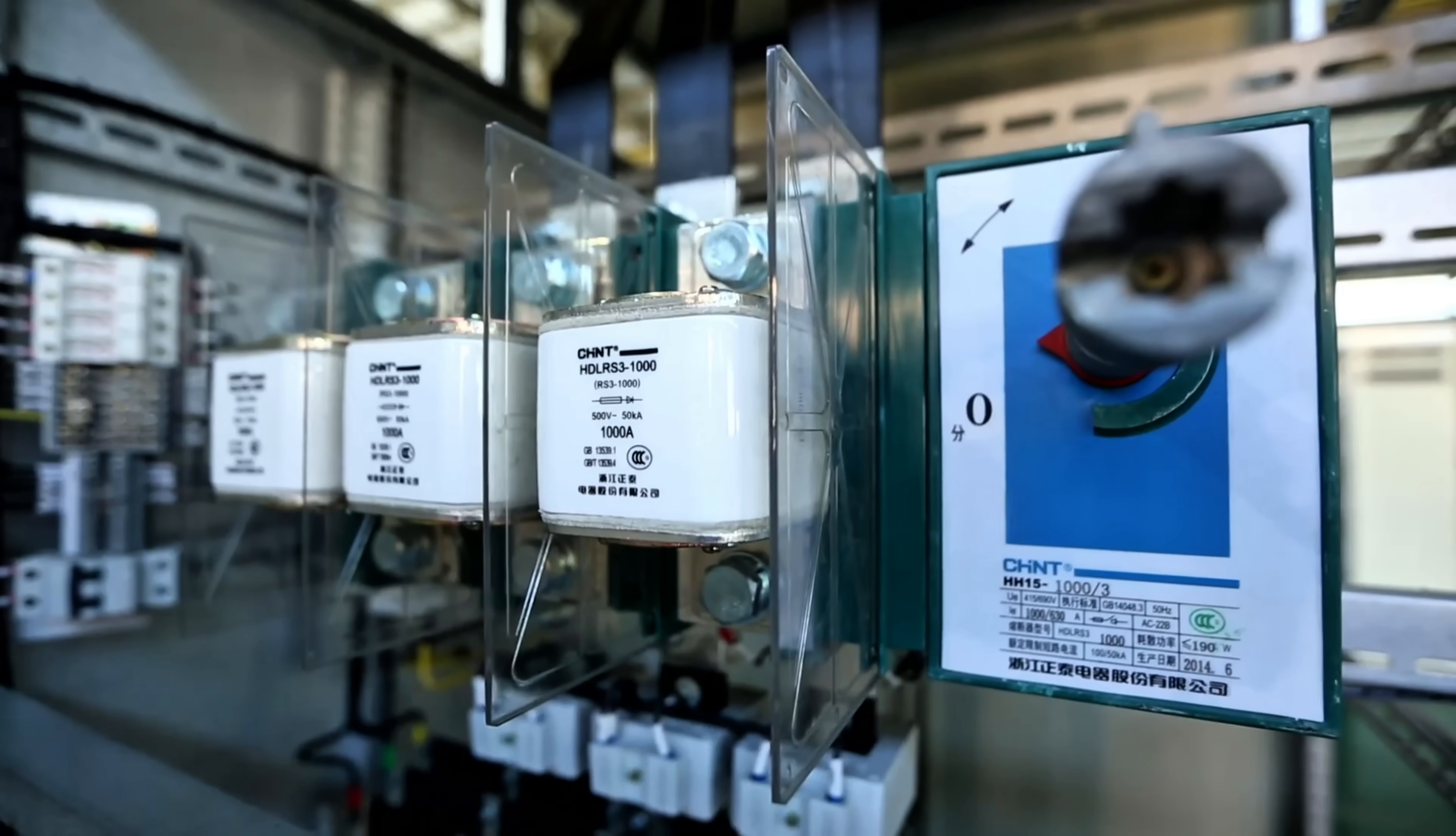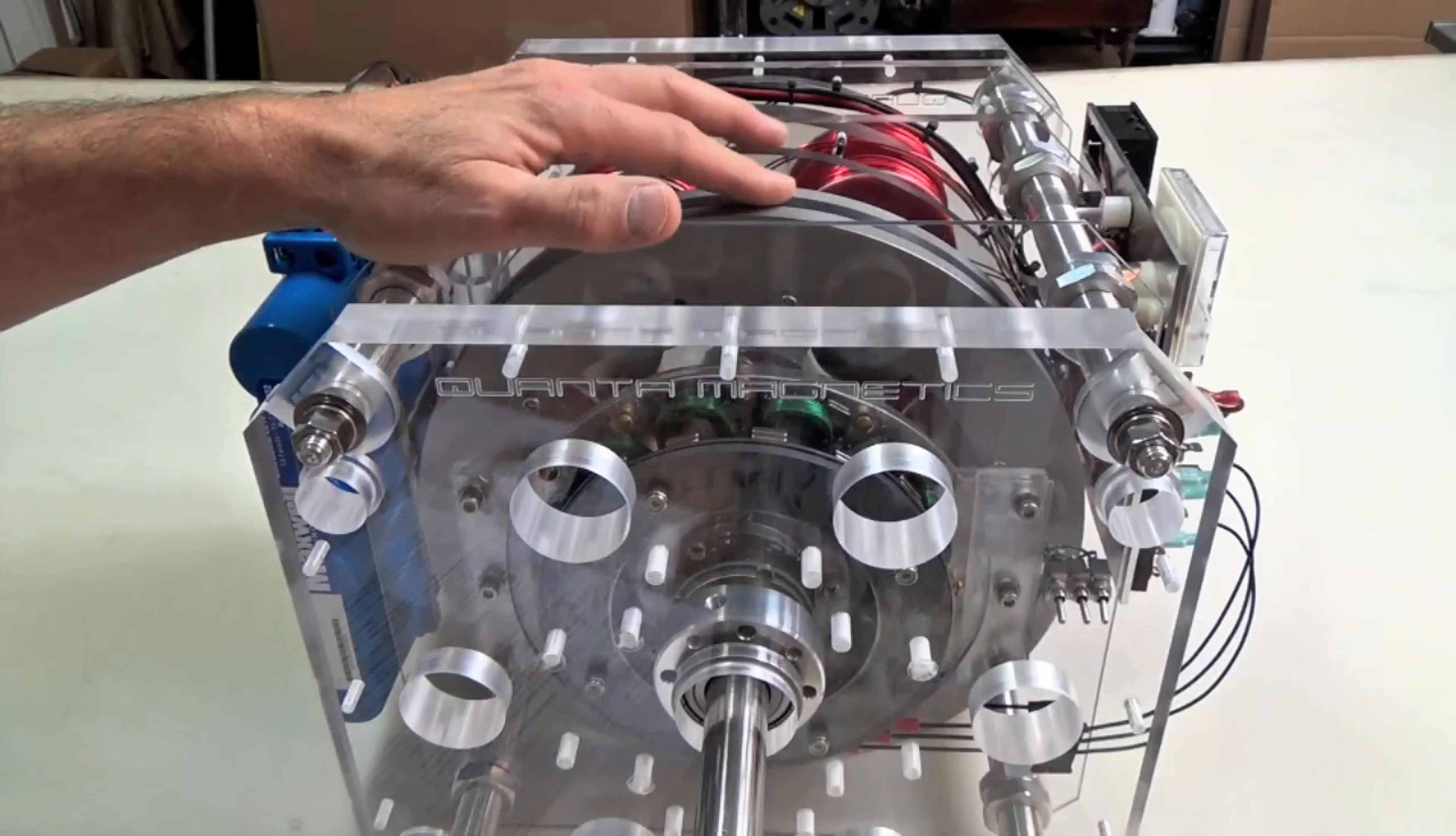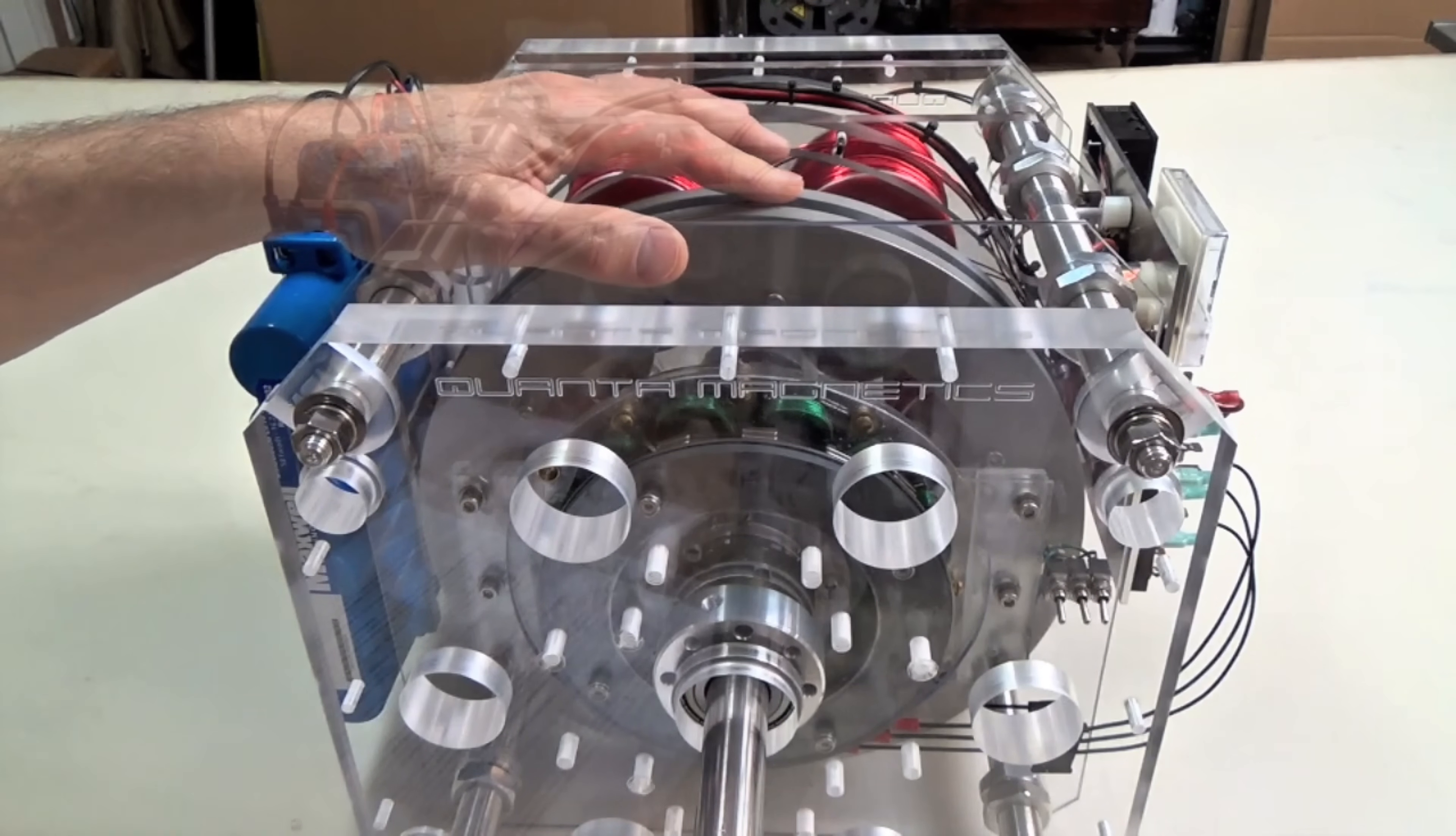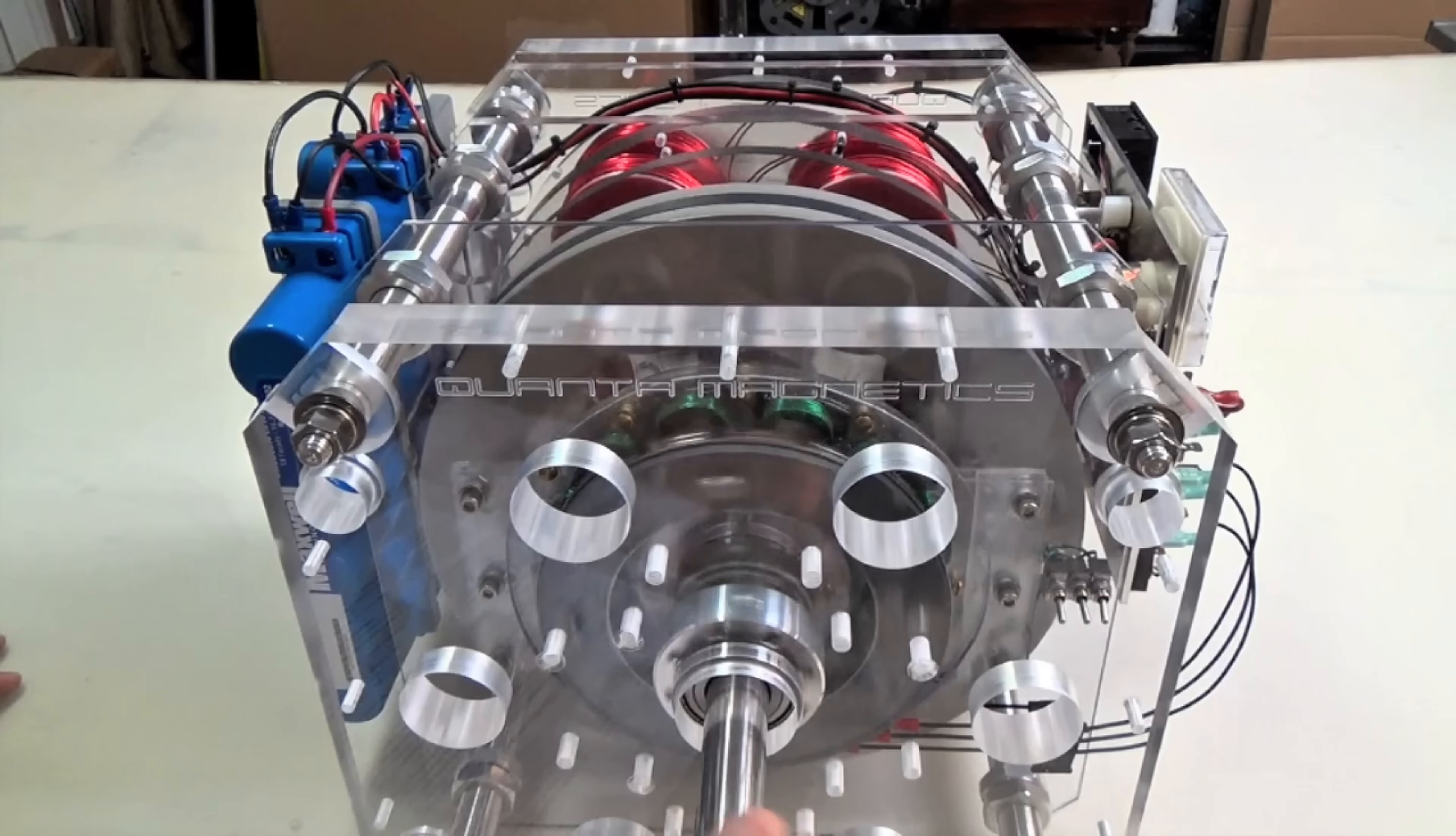The heart of the machine is a huge spinning flywheel, essentially a heavy disk that has been carefully designed so that most of its weight is concentrated around the outer edge. Why is that important? When mass is located far from the center, the wheel has a tremendous amount of rotational inertia. In everyday terms, once you get it spinning, it strongly resists changes to its motion.